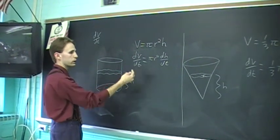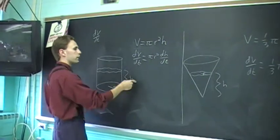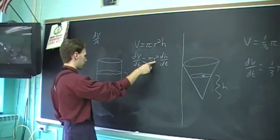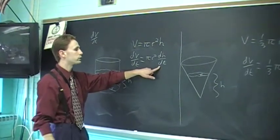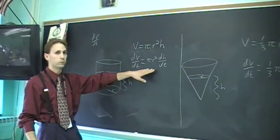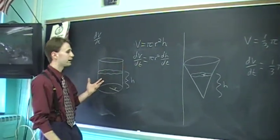If dV/dt is fixed, say 3 cubic inches per second, if you divide that by π and divide by the square of the radius, you will get the rate of change of the depth, and it's going to be constant as we had anticipated.